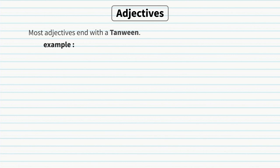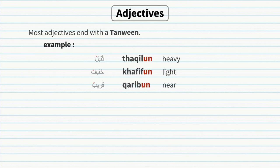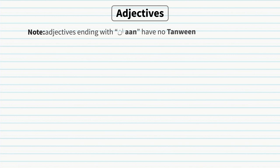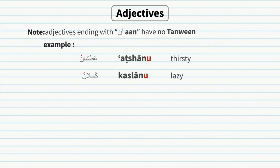Most adjectives by default also end with a tanween — for example, thaqeelun, khafifun, qareebun, jamilun, sari'un, harun, sahlun. But tanween on adjectives doesn't mean indefinite state, since 'a heavy' or 'a light' doesn't make sense. Not all adjectives end with a tanween; adjectives that end with 'an' have no tanween — for example, atshanu, kaslanu, farhanu.